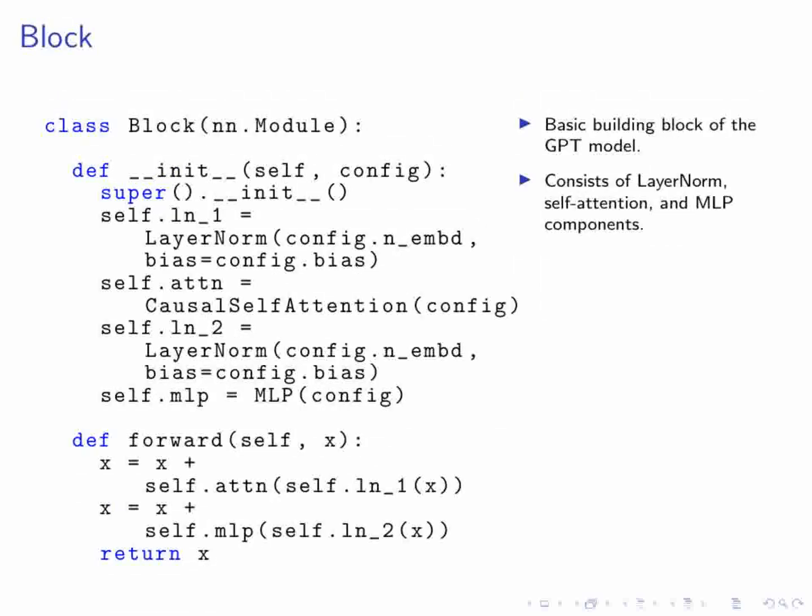The Block class defines the basic building block of the GPT model. During initialization, we set up the ln_1 layer for layer normalization on the input, followed by the ATTN layer which implements causal self-attention. The ln_2 layer then normalizes the output of the ATTN layer, and the MLP layer applies the multi-layer perceptron to this normalized output. In the forward method, we process the input tensor by sequentially applying ln_1, ATTN, ln_2, and MLP, adding the output of each layer to the input tensor through residual connections.